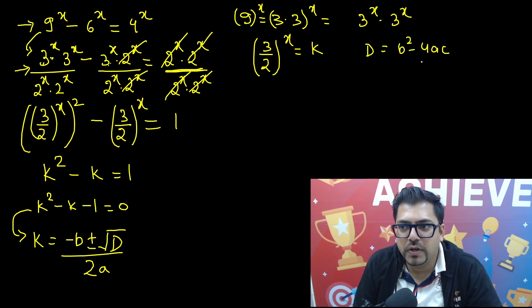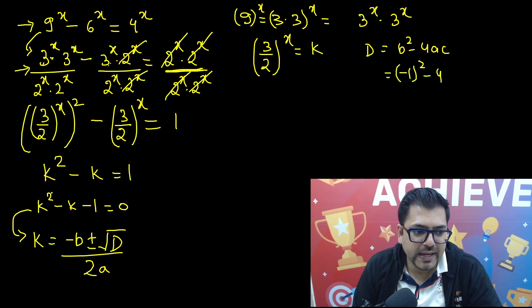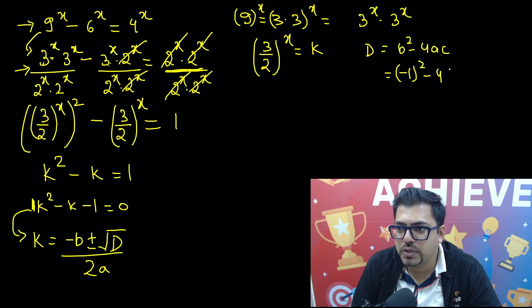Now what is this discriminant? So discriminant value is b squared minus 4ac. We will use the value: b is minus 1 whole squared minus 4. What is a? a is the coefficient of square term. And then c, c is the constant term, so minus 1.